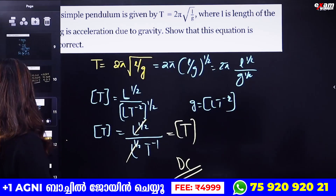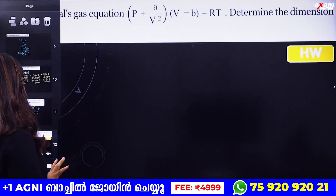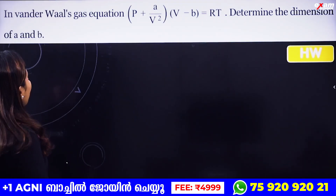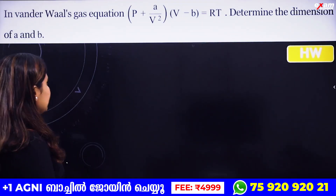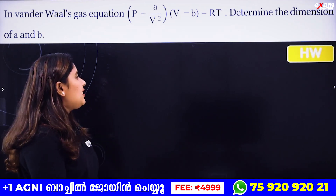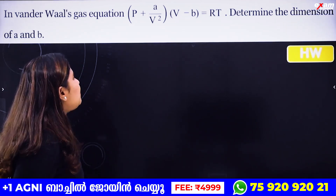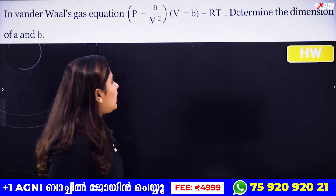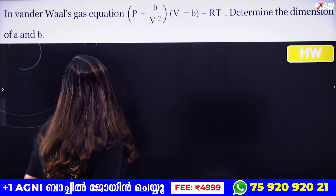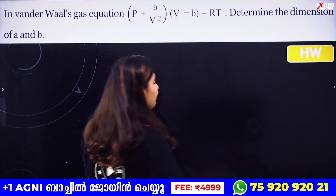Let's take another question. Van der Waals equation: (P + a/V²)(V − b) = RT. We need to determine the dimensions of a and b.